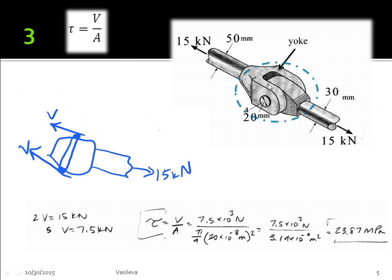Okay, so then we move on to finding the shear stress right here, and that is caused by the pins. We have two pins, one on this side right here, and then another one we can't see on the other side. So we have two shear forces, and because we have two shear forces, we set those equal to our 15 kilonewtons.